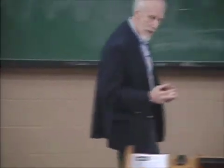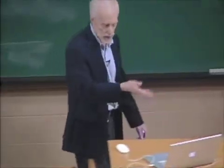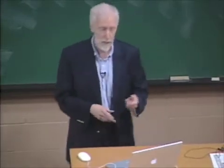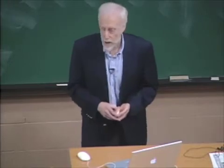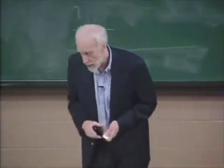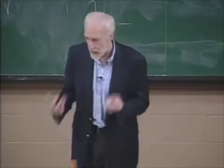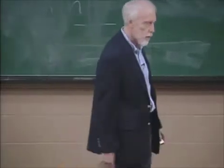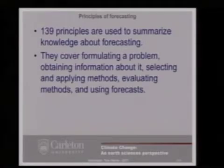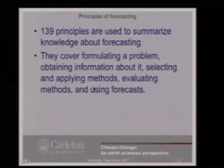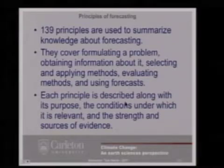There is a scientific forecasting method, well described in the webpage I link to this slide. Basically, there are 139 principles used to summarize knowledge about forecasting. They cover things like formulating a problem, obtaining information about it, selecting and applying methods, evaluating methods, and using the forecast. Each principle is described along with its purpose in that document.